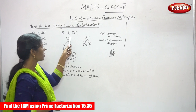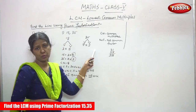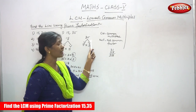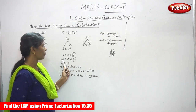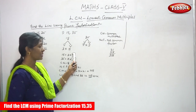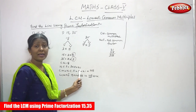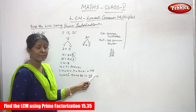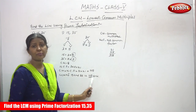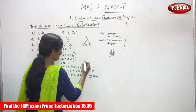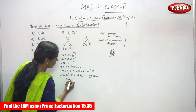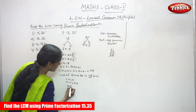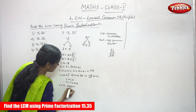To repeat: for 15 and 35, find the factors — 15 equals 3 into 5, and 35 equals 7 into 5. The common multiple is 5, and the not common factors are 3 and 7. Multiply: 5 into 3 into 7 equals 105. That is the LCM. You can also write it directly as CM times NCF: 5 into 3 into 7 equals 105.